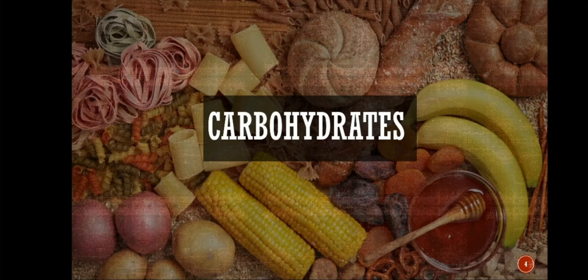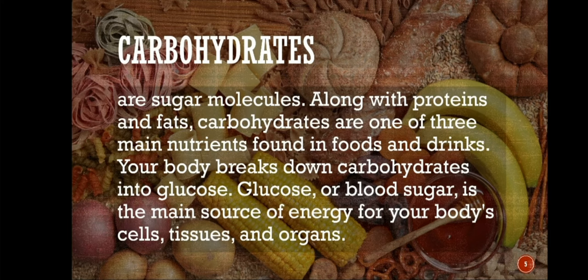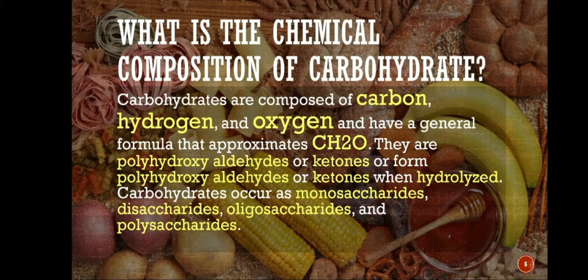Let us start with the first, which is carbohydrates. Carbohydrates are sugar molecules. Along with proteins and fats, carbohydrates are one of the three main nutrients found in foods and drinks. Your body breaks down carbohydrates into glucose. Glucose or blood sugar is the main source of energy for your body's cells, tissues, and organs. Carbohydrates are composed of carbon, hydrogen, and oxygen, and have a general formula that approximates CH2O. They are polyhydroxy aldehydes or ketones, or form polyhydroxy aldehydes or ketones when hydrolyzed.